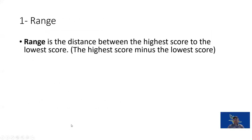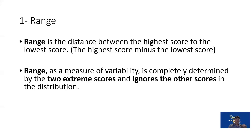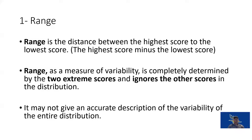The range is the distance between the highest and the lowest score — it looks at either end of the frequency distribution curve. It doesn't matter what scores are in between; it just looks at our high and our low. So it gives us some information but doesn't tell us what's happening in the middle.